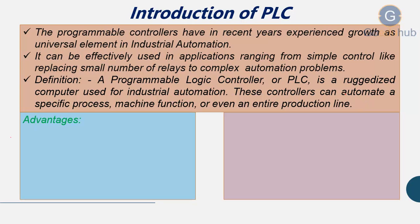One advantage of PLC is that it is compact in size, which reduces the space required to place the panel. In past situations where relays were used to control the process, if the number of inputs and outputs increased, the size of the panel also increased. So with a compact PLC, you can control thousands of inputs and outputs.